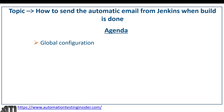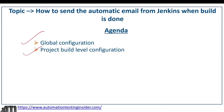Let's get started. There are two configurations in Jenkins to set up automated email: one is at the global level — global configuration — and another is at the project build level configuration. I have already completed the global configuration and documented everything. At the end of the video I'll share a link so you can download that document.